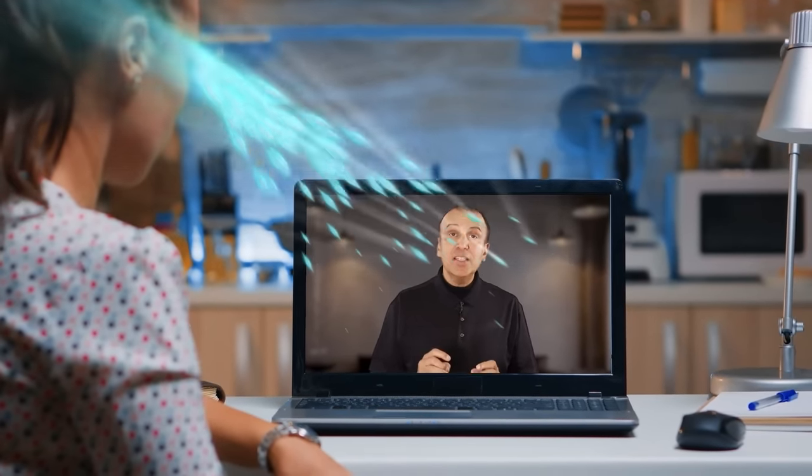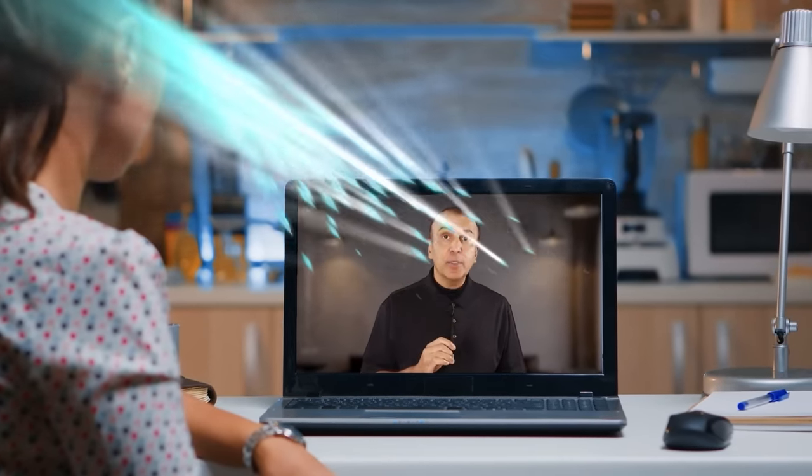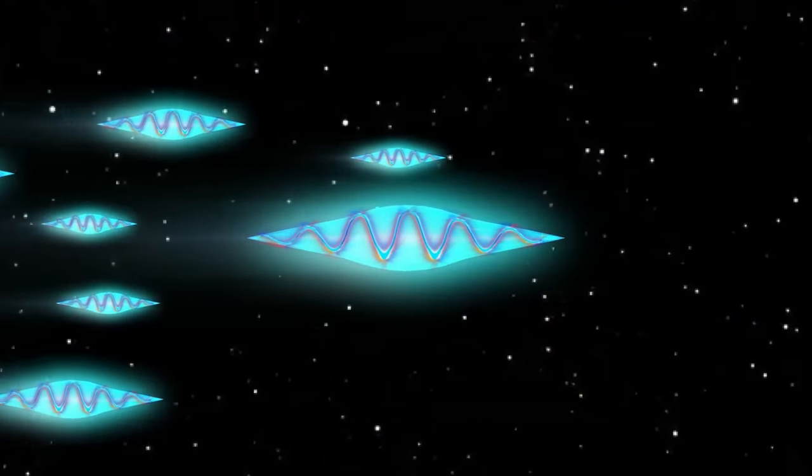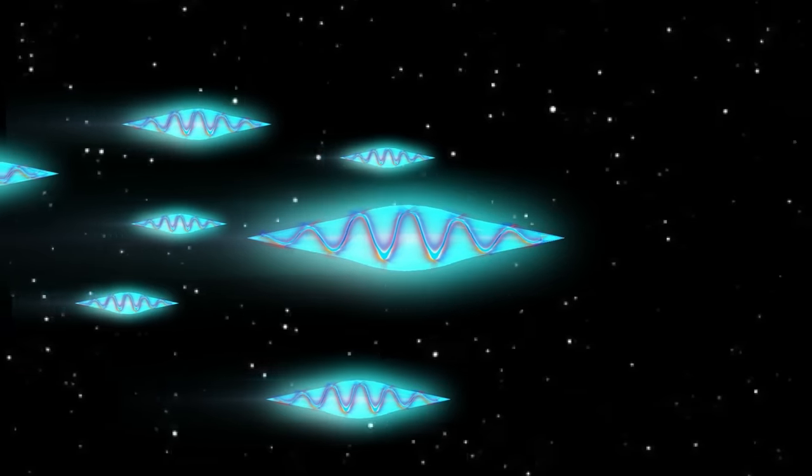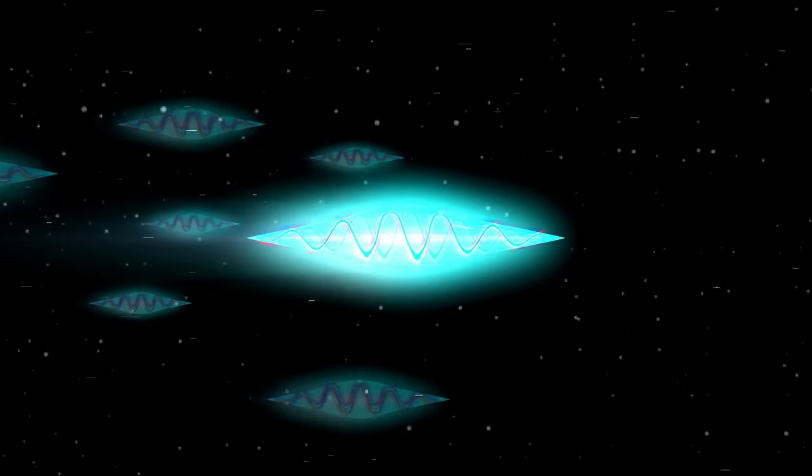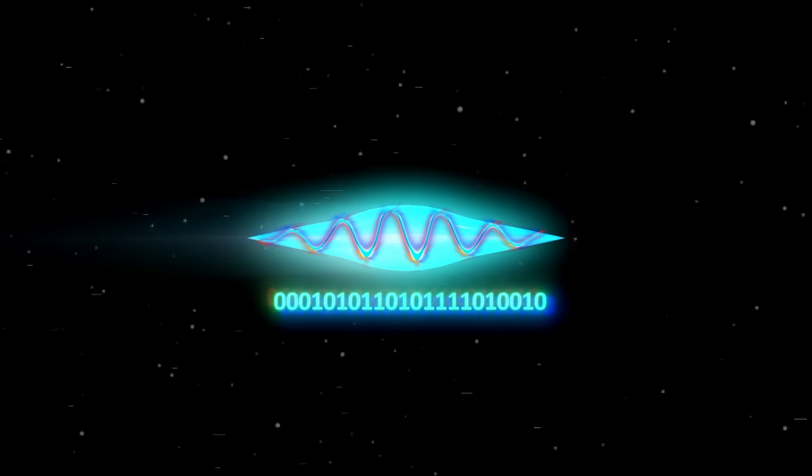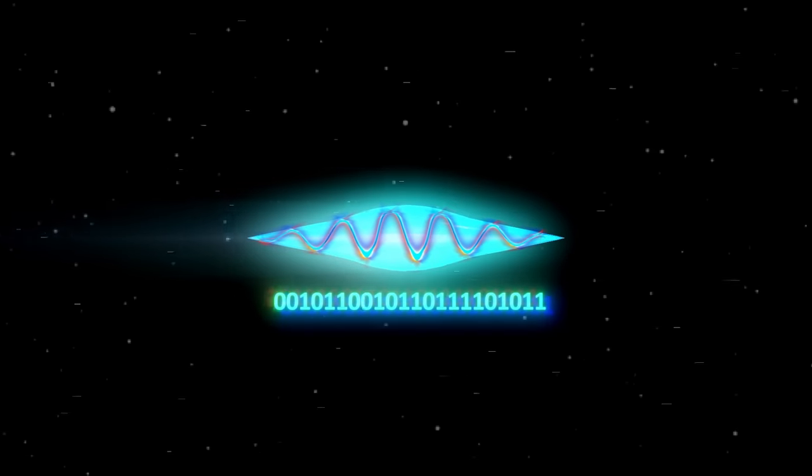As you're watching this video right now on your screen, billions upon billions of tiny quantum objects called photons are entering your eyes. They are the universe's smallest fundamental carriers of measurable energy. They carry not only energy, but also information. It's what makes up light. It's what allows you to see and gather information about your surroundings.